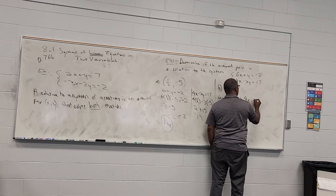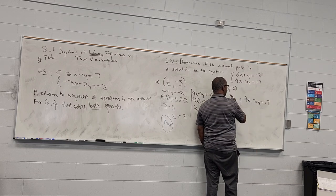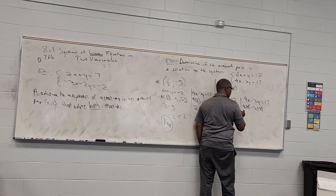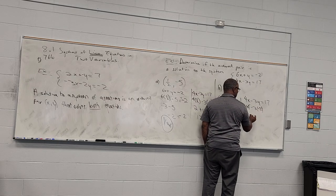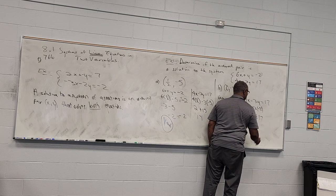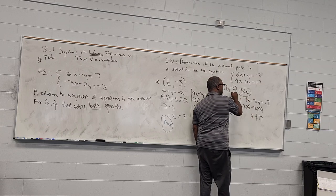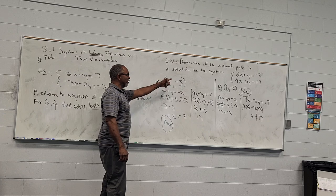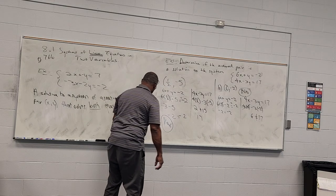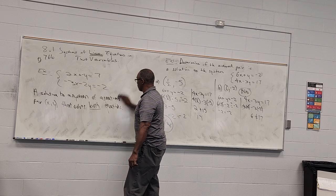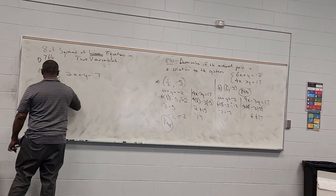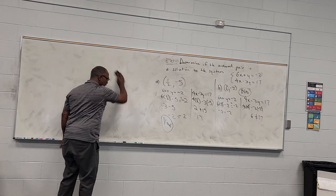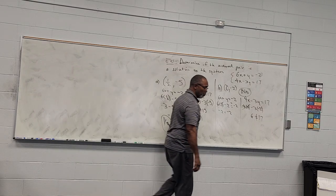Now check the second line: 4x minus 3y equals 17. Where I have x I put 0, and where I have y I put negative 2. Four times 0 is 0; negative 3 times negative 2 is positive 6. But 6 is not equal to 17, so no — that point is not a solution to the system. To be a solution, the point has to live on both lines.